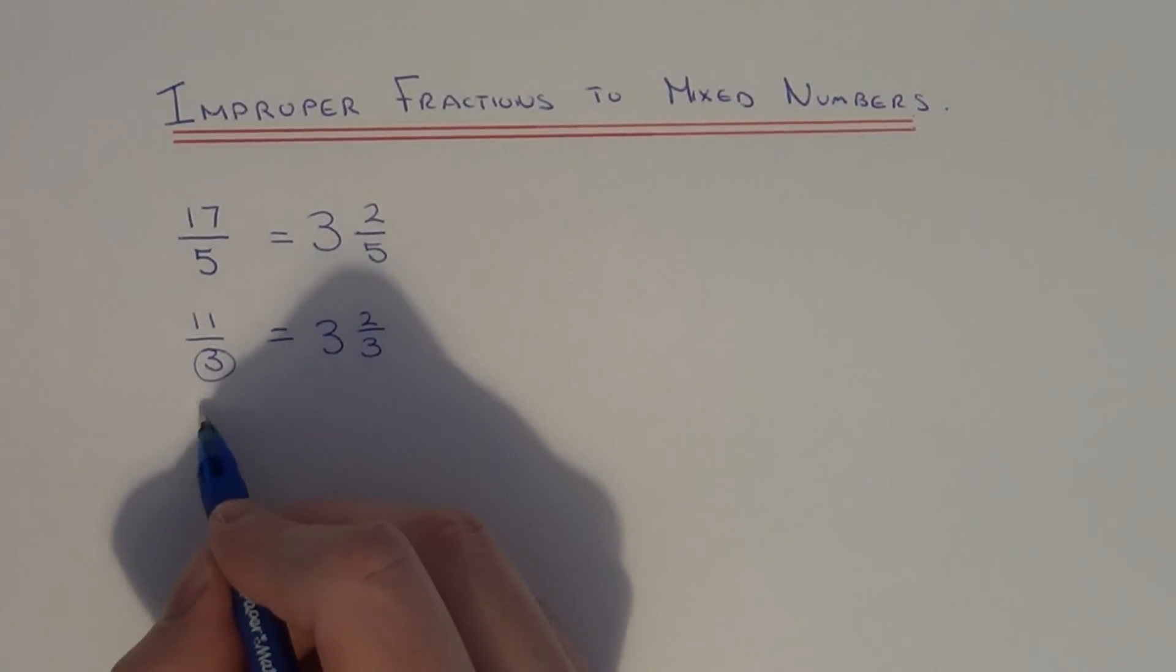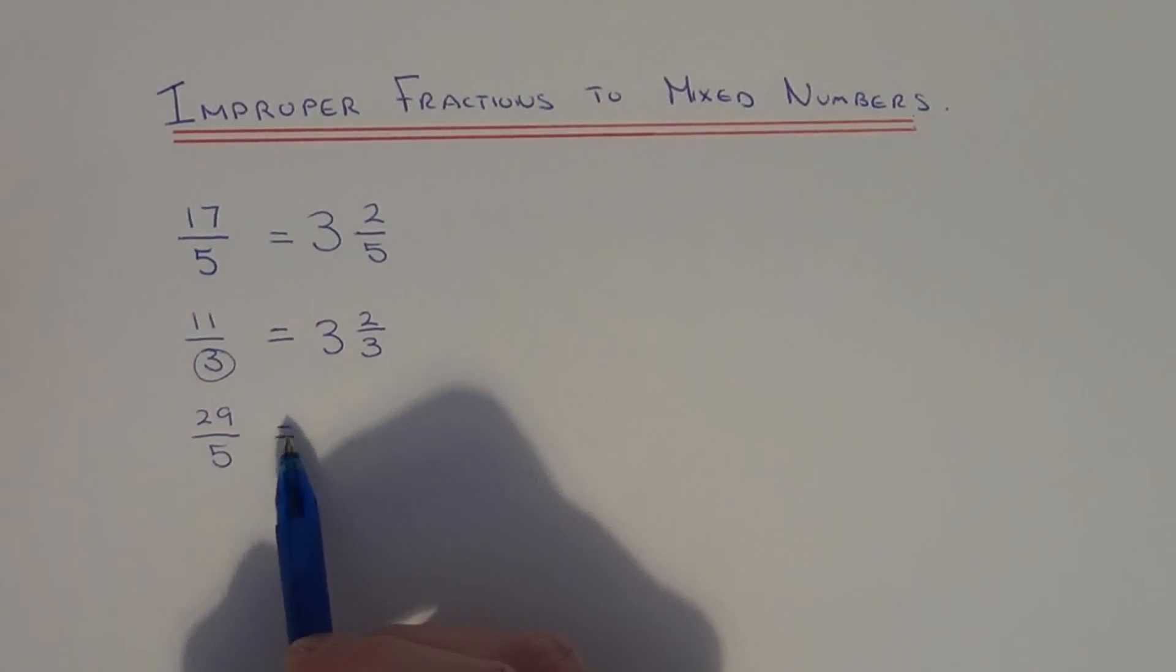Let's do a different one. So let's go with 29 fifths. So again let's convert this to a mixed number. So all we need to do is do 29 divided by 5. So 5, 10, 15, 20, 25.